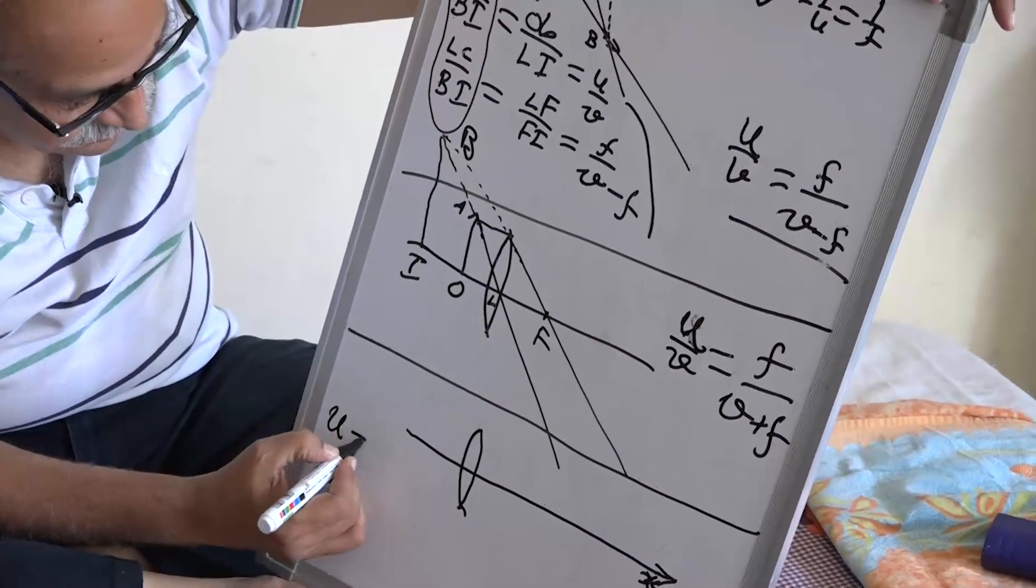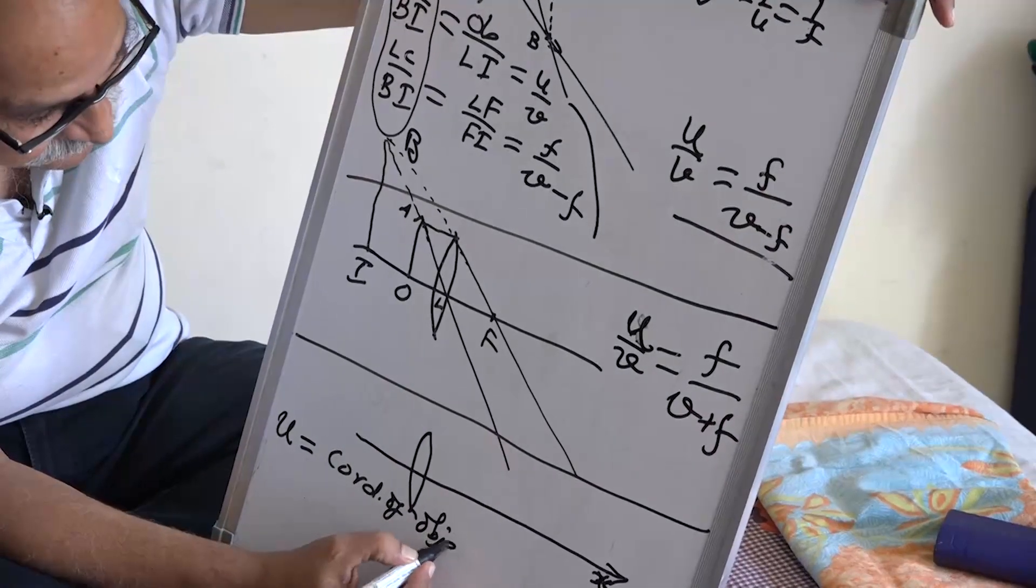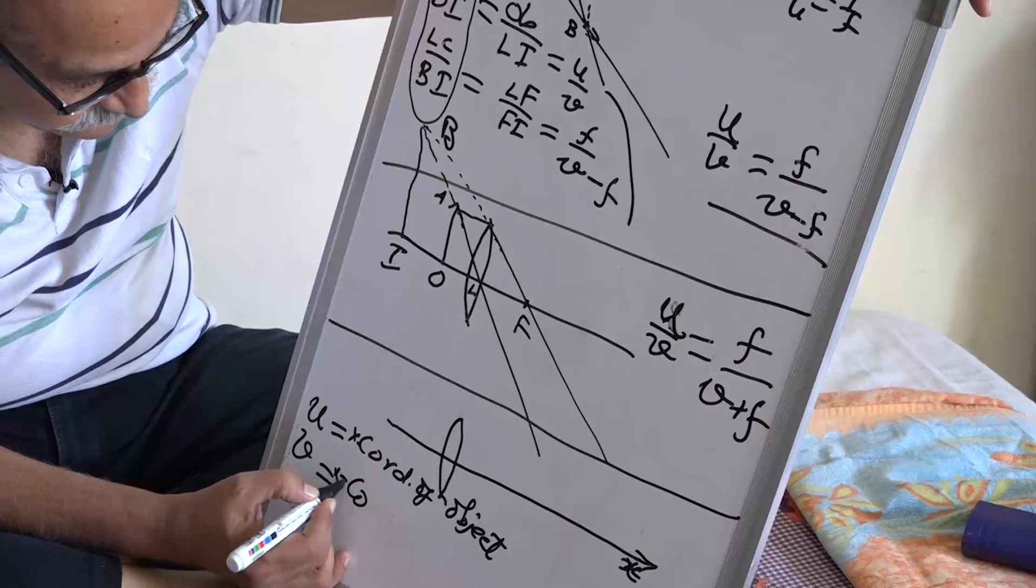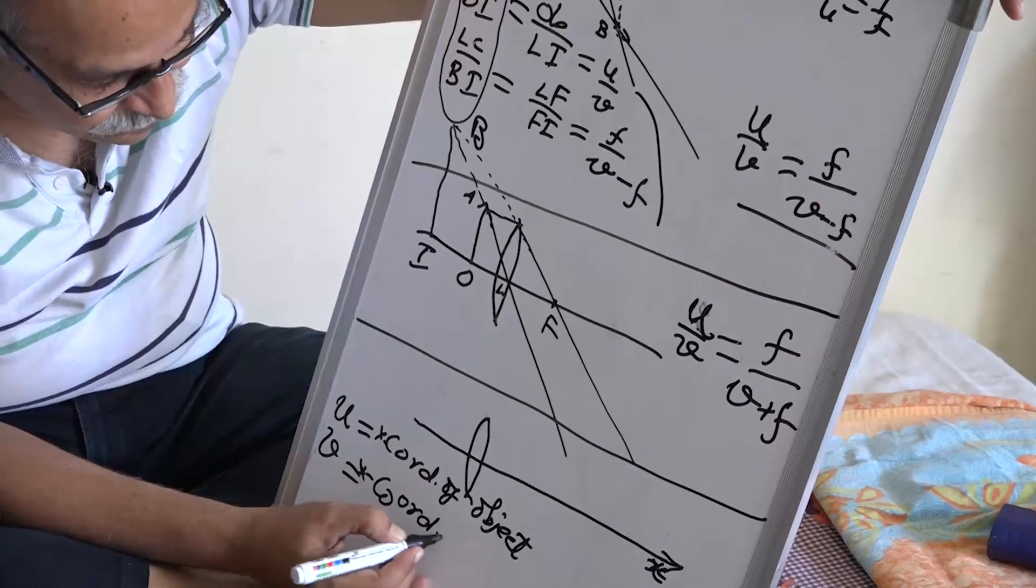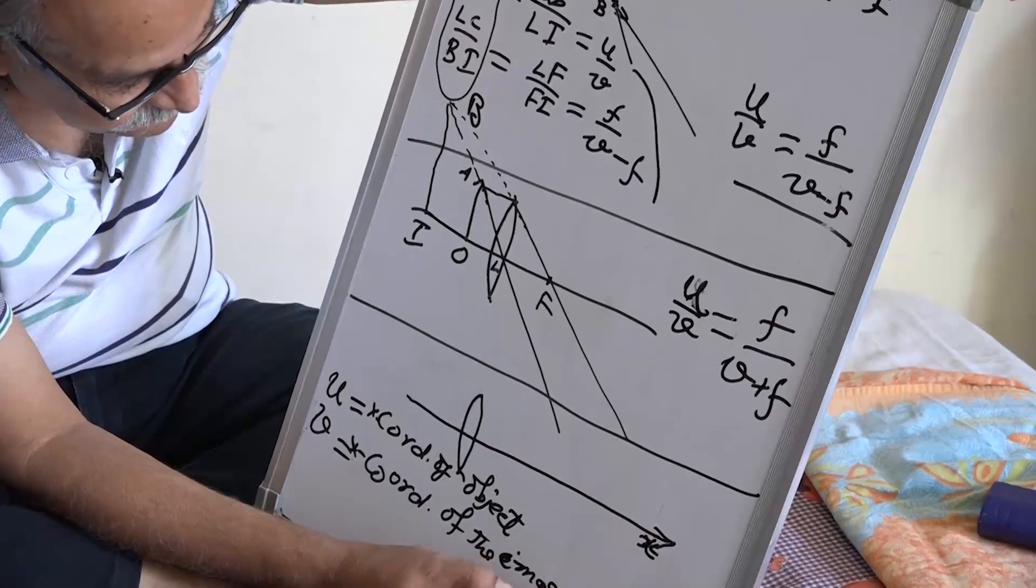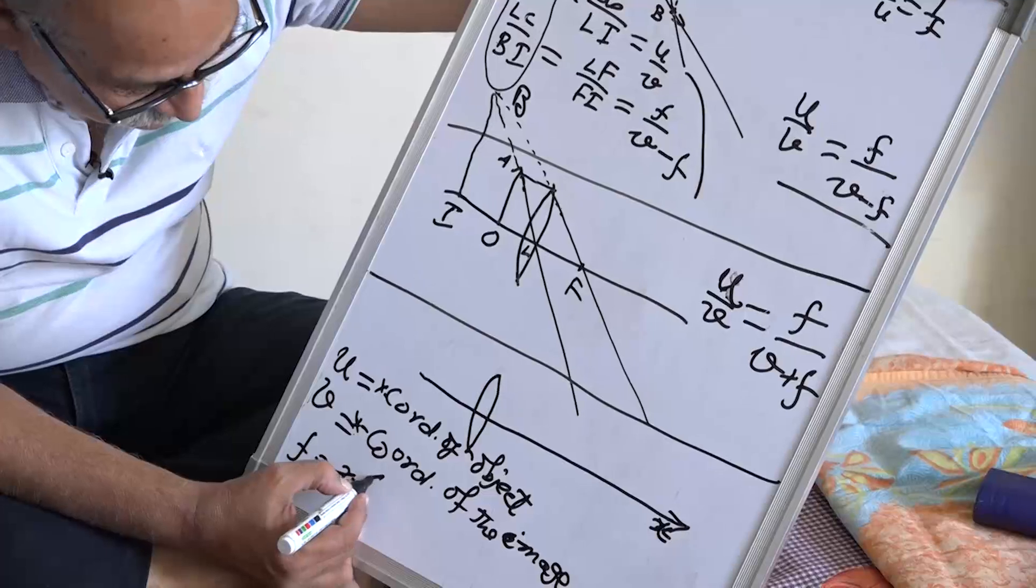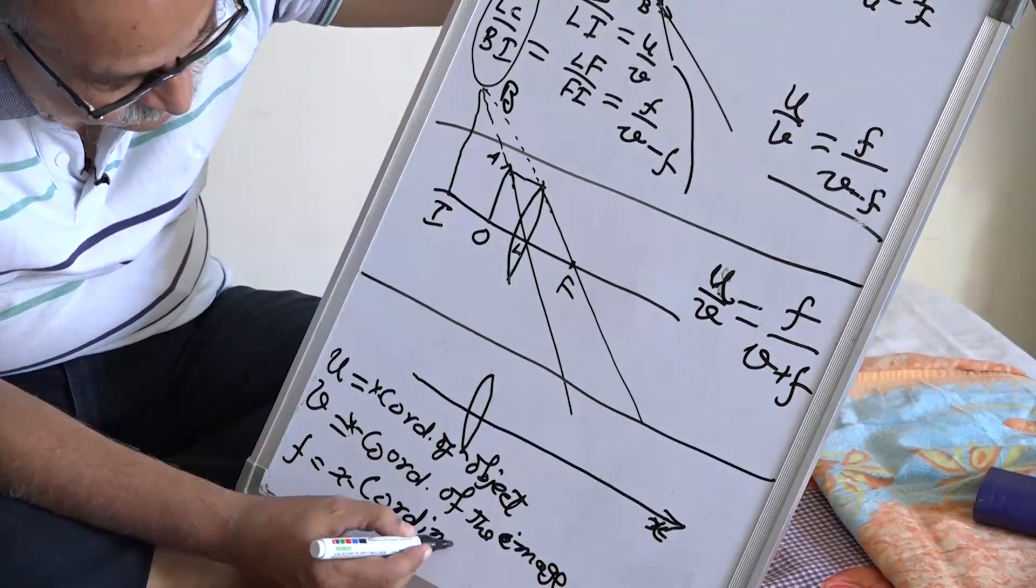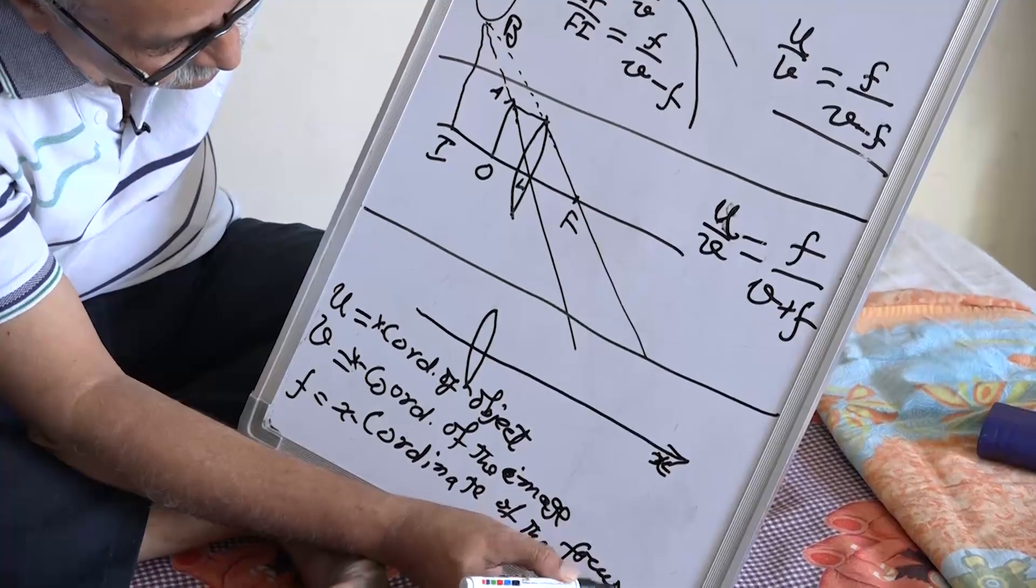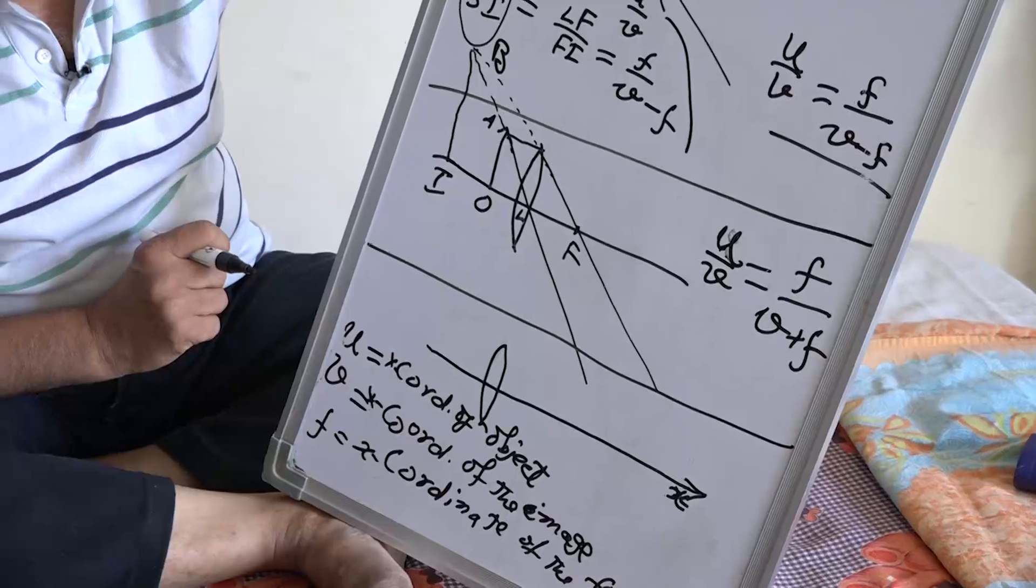We say that this principle axis is x axis and this is x direction. U is not distance, is the coordinate of object, v is the x coordinate of the image and f is x coordinate of the focus. We try to write our equation in terms of this U, V, F.